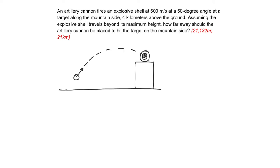I've gone ahead and drawn my diagram, and I'm going to label all the information I was given on my diagram. All right, so I know that in this setup, my VI is 500 meters per second, my angle is 50 degrees,